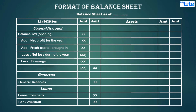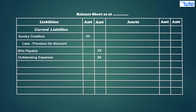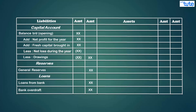The second last heading on the liability side is loans, which includes bank loans, bank overdrafts, and amounts borrowed from others on which interest is paid. The last heading is current liabilities — these are short-term liabilities — and include creditors for goods, bills payable, outstanding expenses, various provisions, and income received in advance.